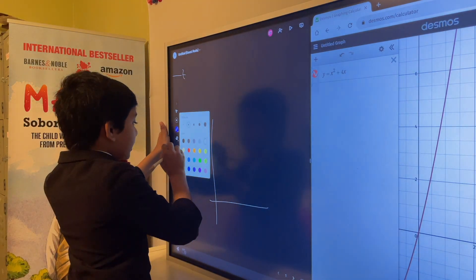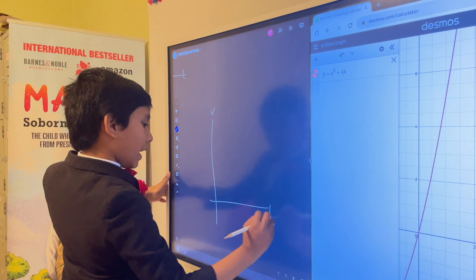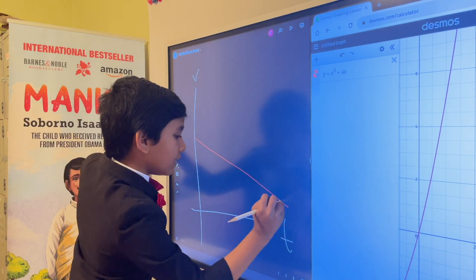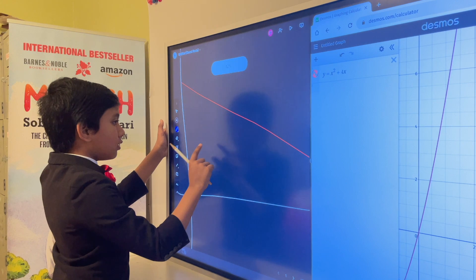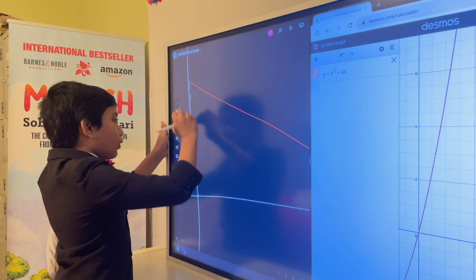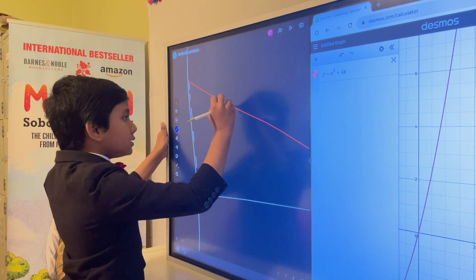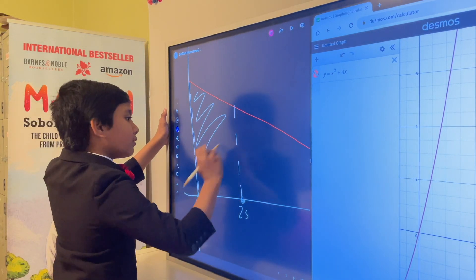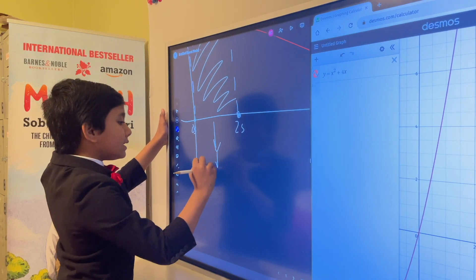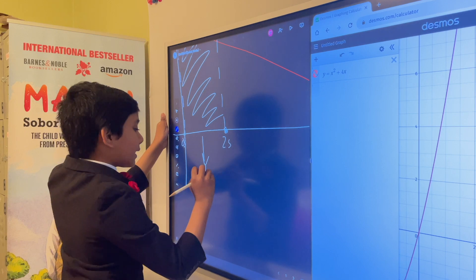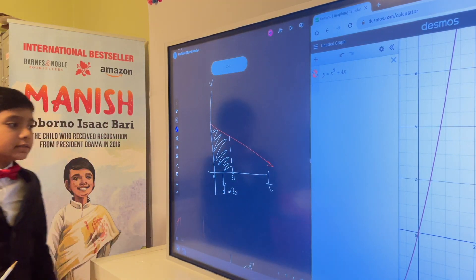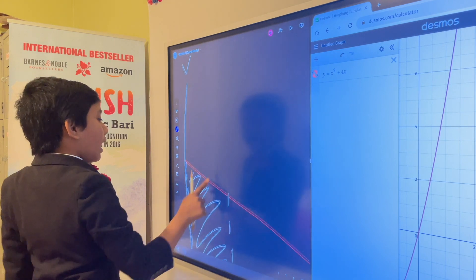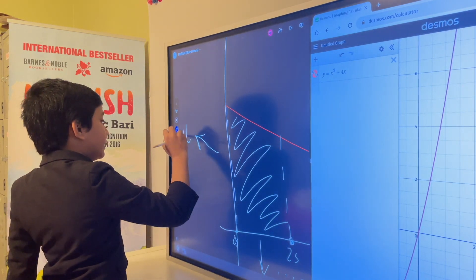Now let's finally remember one last thing. If you have a VT graph, then you have to remember that the area under a graph from one point to another, for example from zero seconds to two seconds, will be the distance traveled in two seconds. This is because this is equal to VT.